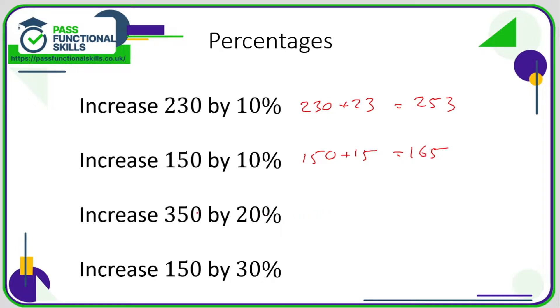What is 20% of 350? That's what we need to work out first and then add it on. Well, 10% is 35, so 20% is 70. So it's 350 plus 70, and that comes to 420.